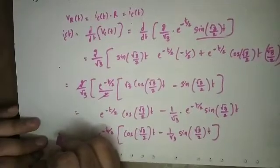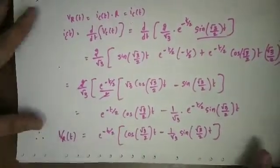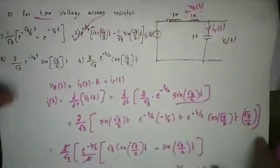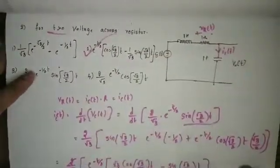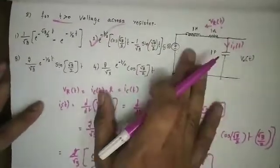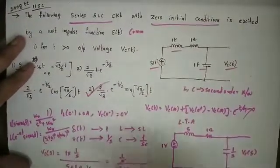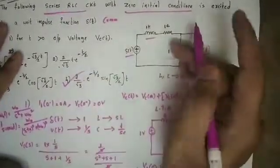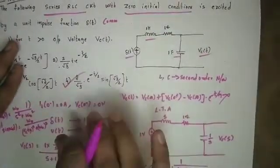So this is Vr(t). The second option is the correct answer. This completes RLC network problems using the Laplace transform. In the transform domain with zero initial conditions it is easy to solve. If you have doubts about the transform domain with non-zero initial conditions, here is an example.